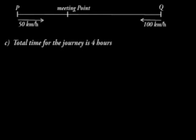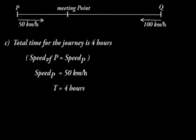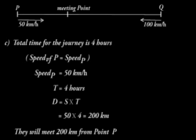How far from P will they meet? The total time for the journey is 4 hours. Let's find how far the car from P will be after 4 hours. Speed of P is 50 kilometers per hour. The time it takes is 4 hours, and the distance it will have covered will be 50 times 4, which is 200 kilometers. The cars will meet at 200 kilometers from point P.